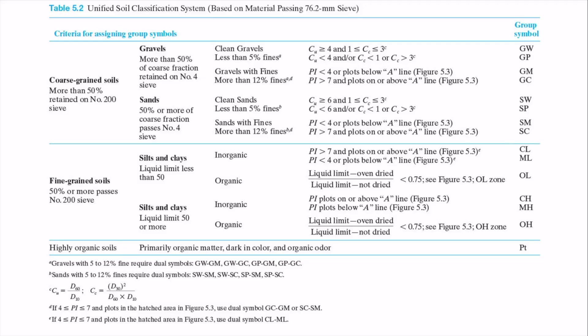This is the table 5.2 soil classification, and for soil B, we know it's a fine-grained soil, because the percent of fine is 60%. So it's more than 50% of the soil passes number 200 sieve. So we're going to use this bottom portion of this table.